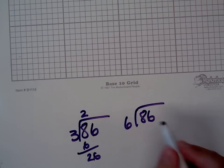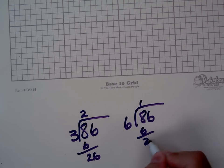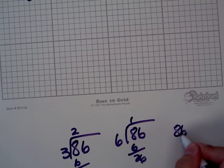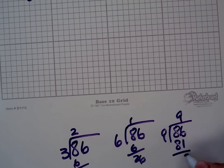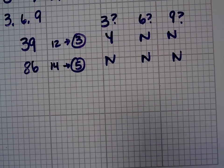86 divided by 6. That's 1. 6, 2. And 6 doesn't go into 26 evenly. And 86 divided by 9. Well, I know 9 times 9 is 81. So it doesn't go in there evenly. So I said no for all of those.